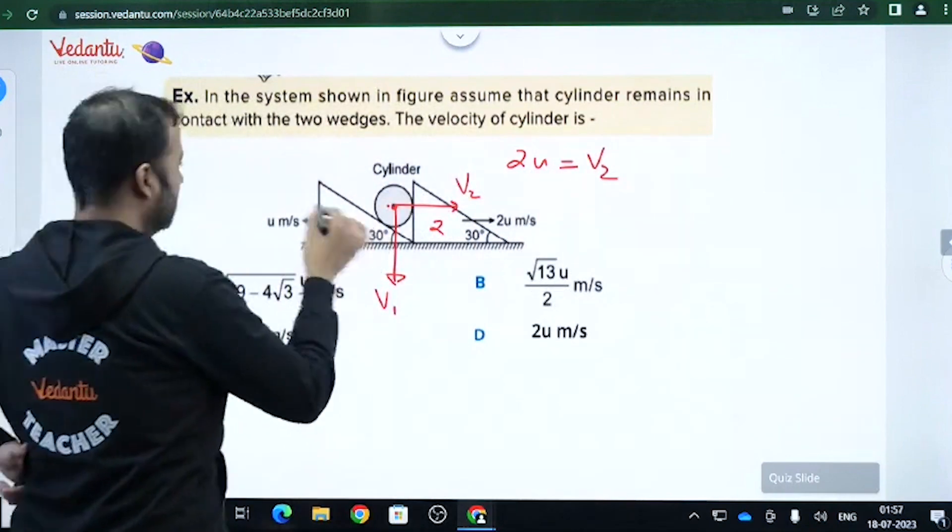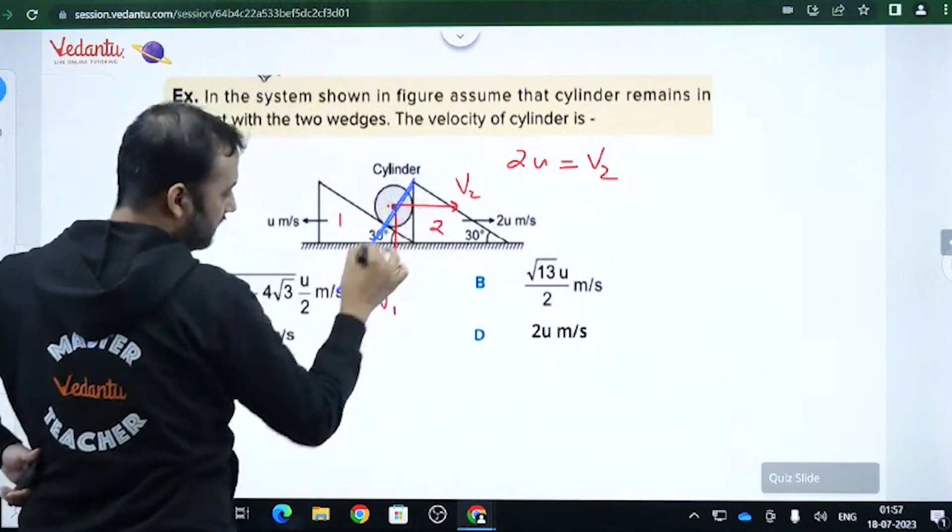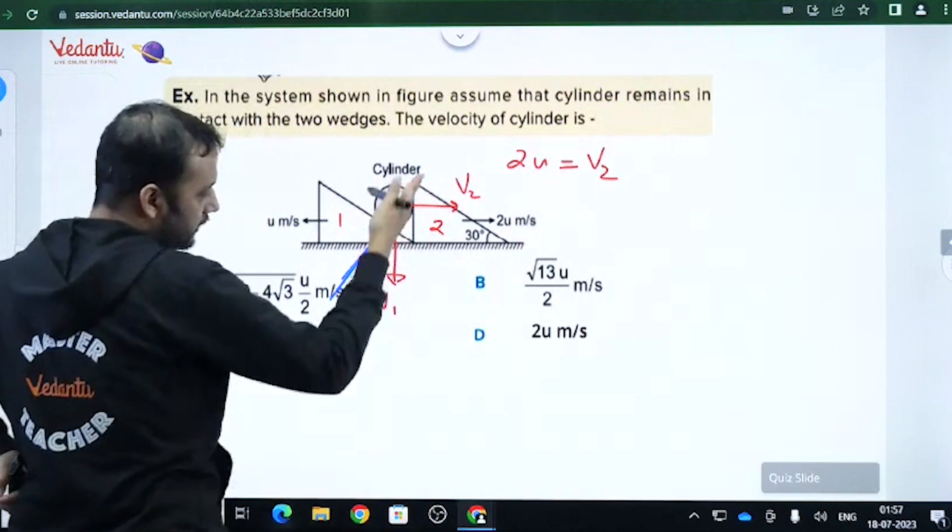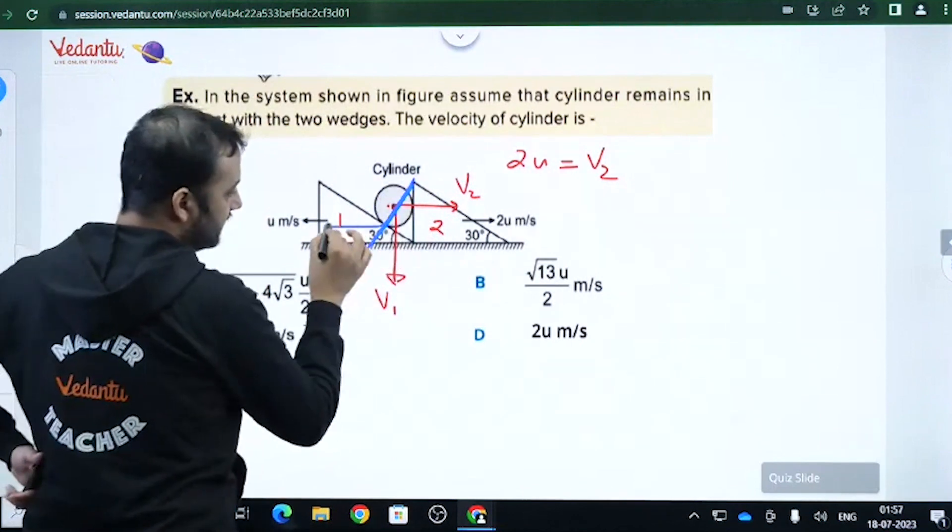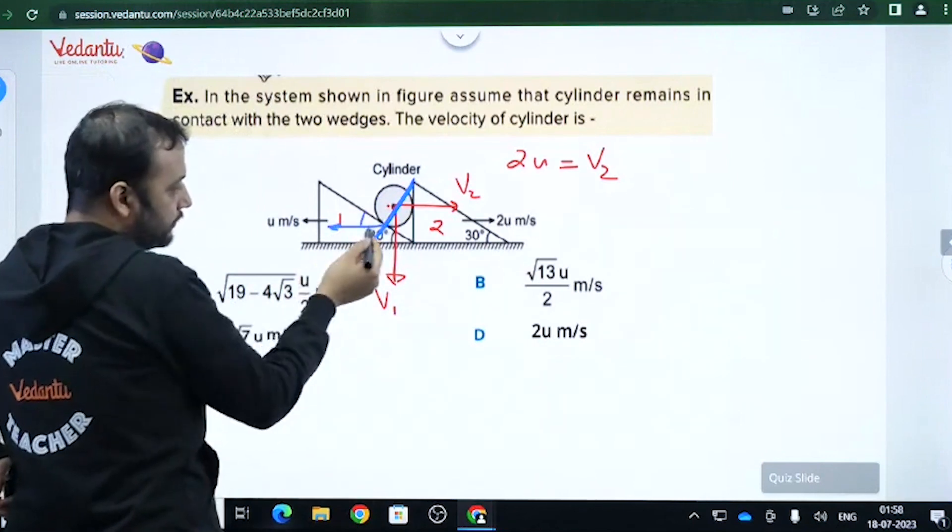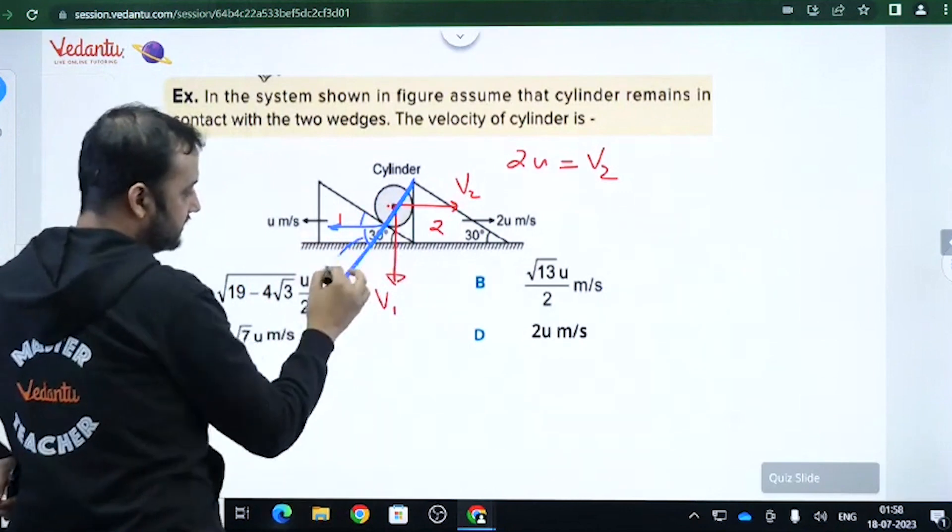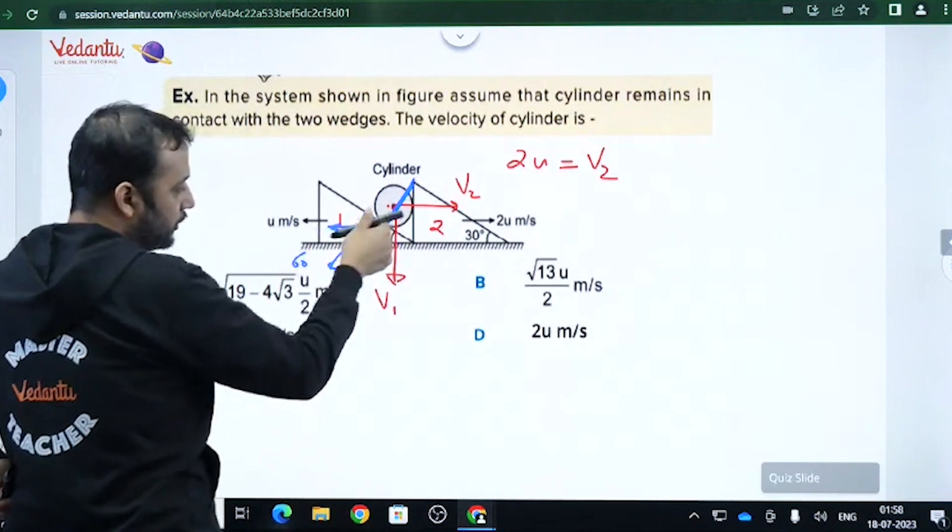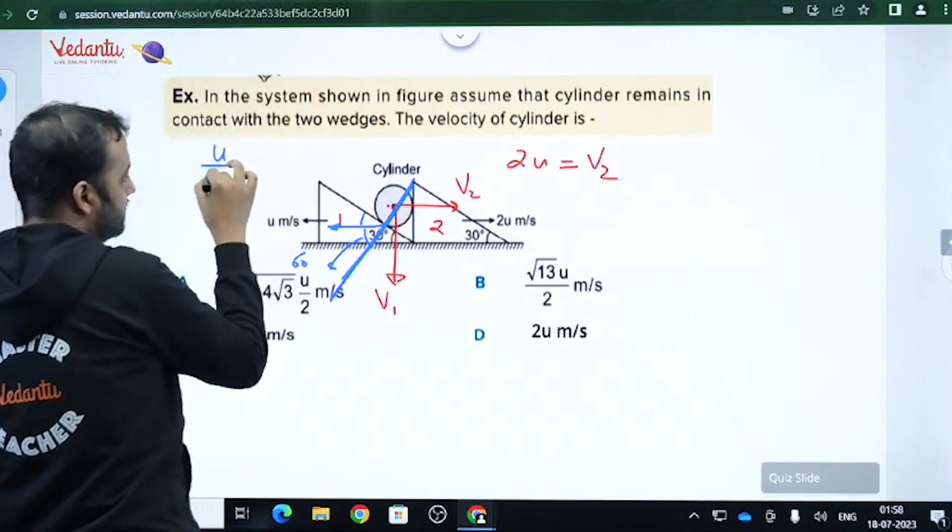Now same logic can be applied for this. This is the direction of common normal. So along the common normal, cylinder and wedge 1 should have same velocity. Wedge 1 has velocity u in this x-axis. This angle is 30, so what is the component of u along this? This is 60 degrees. So the component of u along the normal is u cos 60, which is u by 2.